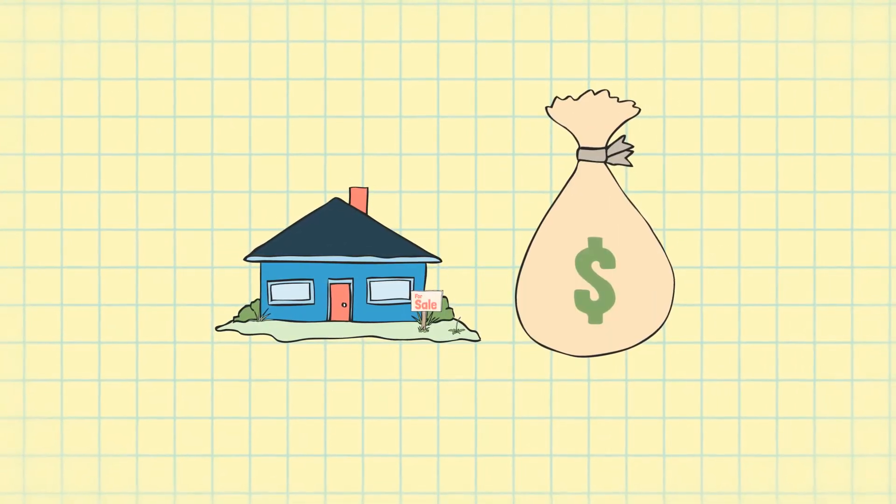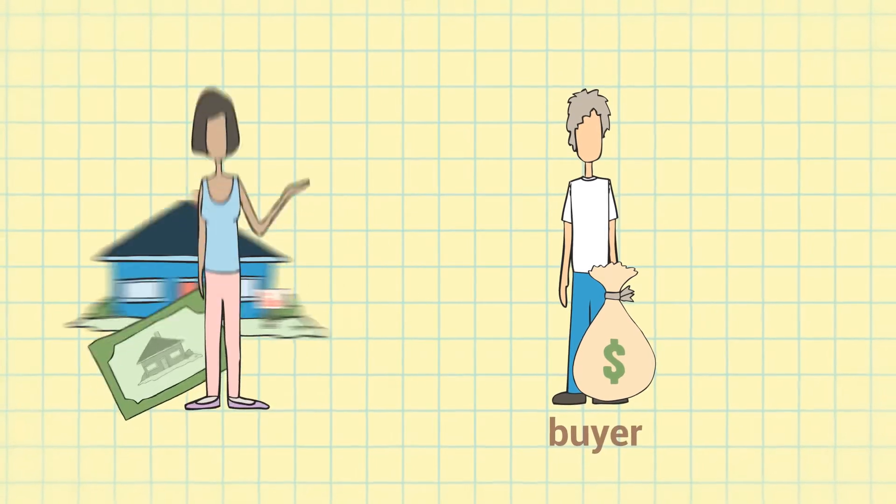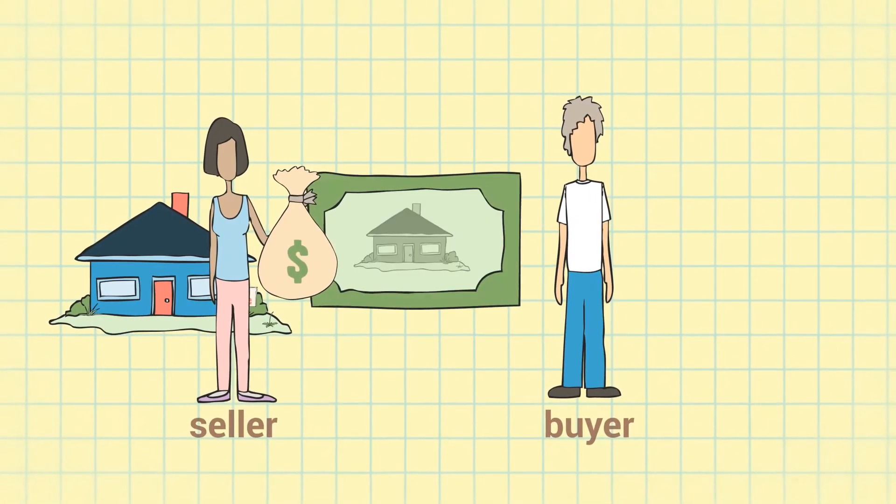When you buy a house with cash, the transaction is pretty simple. The buyer gives the seller the money, and the seller gives the buyer the deed to the house.